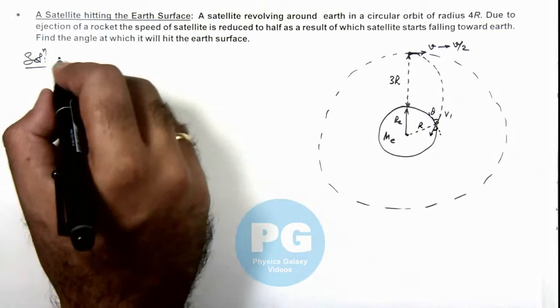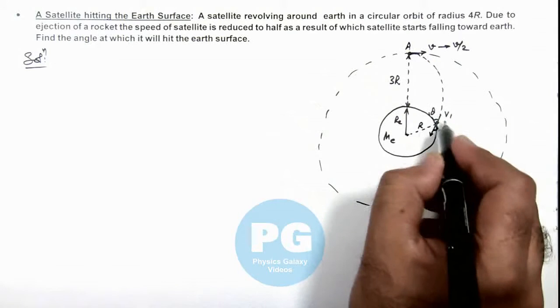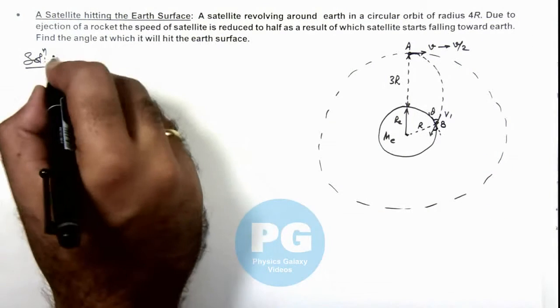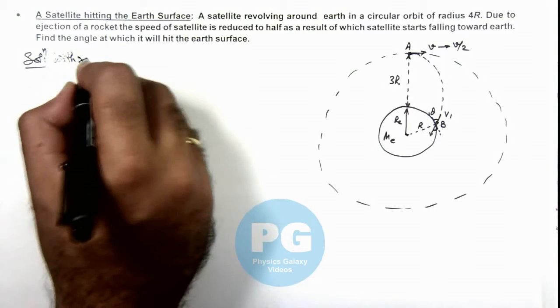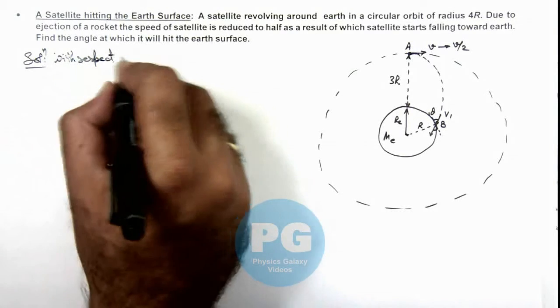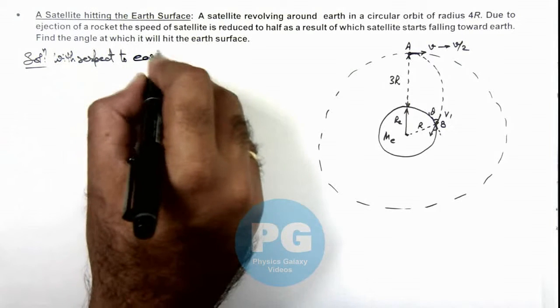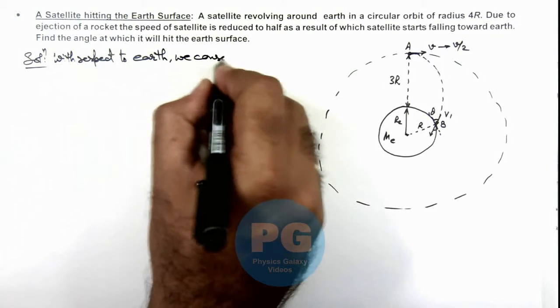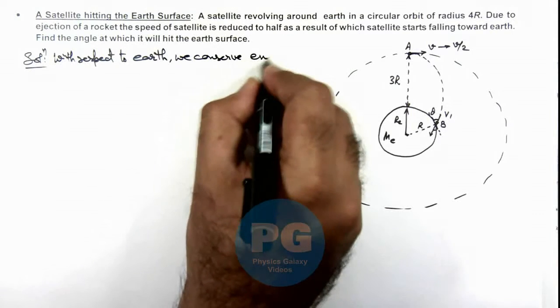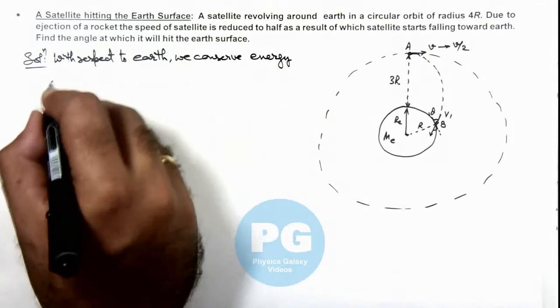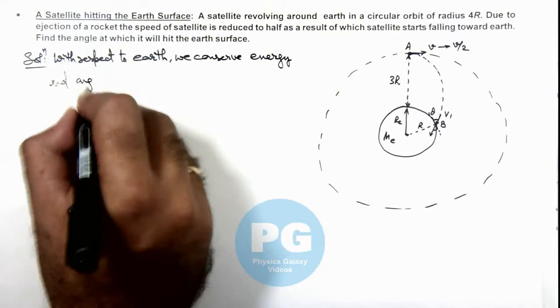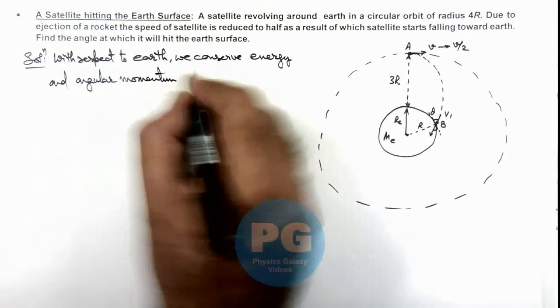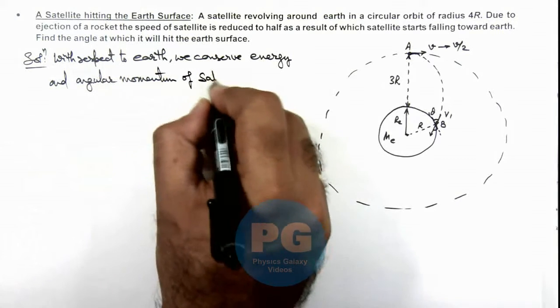Here we can write, if the initial point is A and the point where it hits the Earth surface is B, we can write with respect to Earth, or in the frame of Earth, we conserve energy and angular momentum of the satellite.